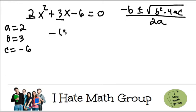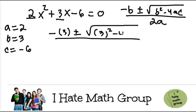Minus 3 plus and minus the square root of 3 squared minus 4 times 2, that's a, times negative 6 all over 2 times 2.